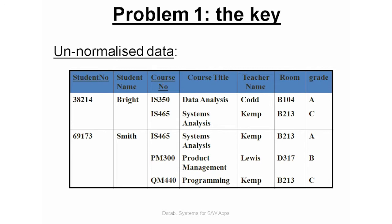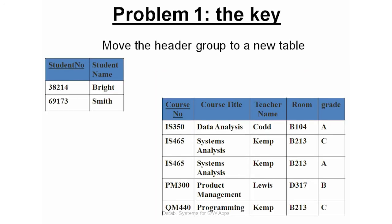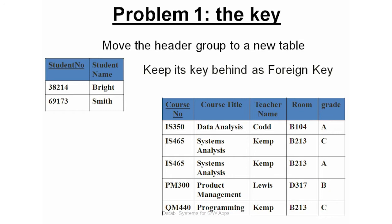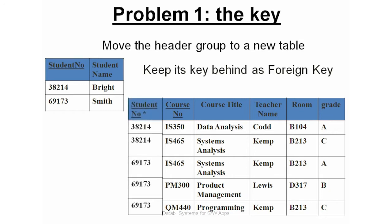The rest are the repeating attributes. In this case, we need to separate the duplicated data from the repeating attributes into two new tables and underline the primary keys of the two new tables. What happens here is that the student number and student name are duplicated data, but as they leave the original table, they leave behind a foreign key, which is the student number.